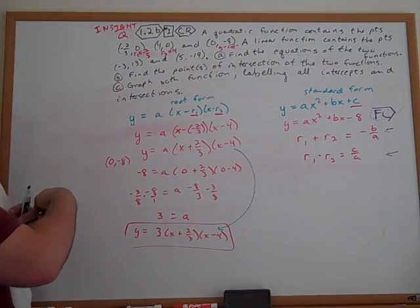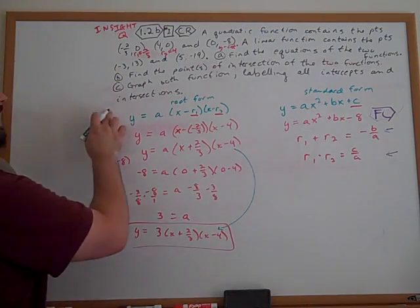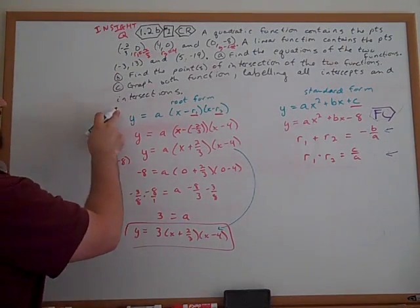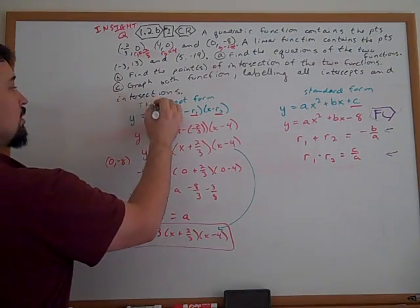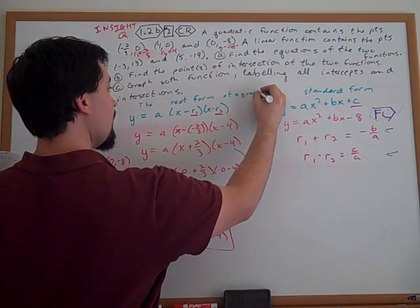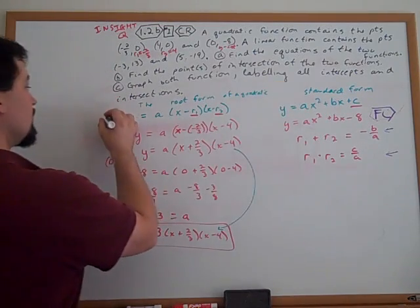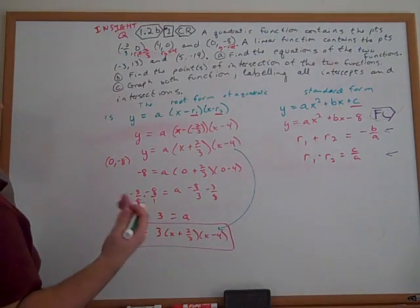Looking back for this root form, we would need to have some words in here, right? We would need to state that this is one of the forms of a quadratic. So we would say the root form of a quadratic is y equals a quantity x minus r1 times x minus r2.